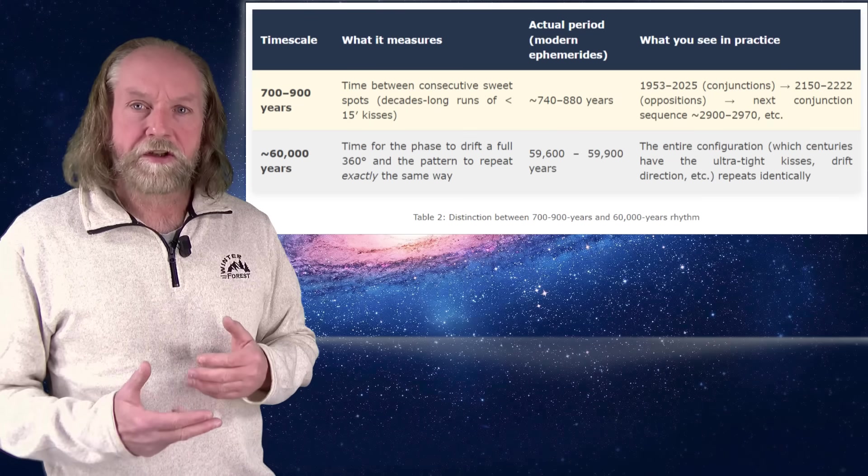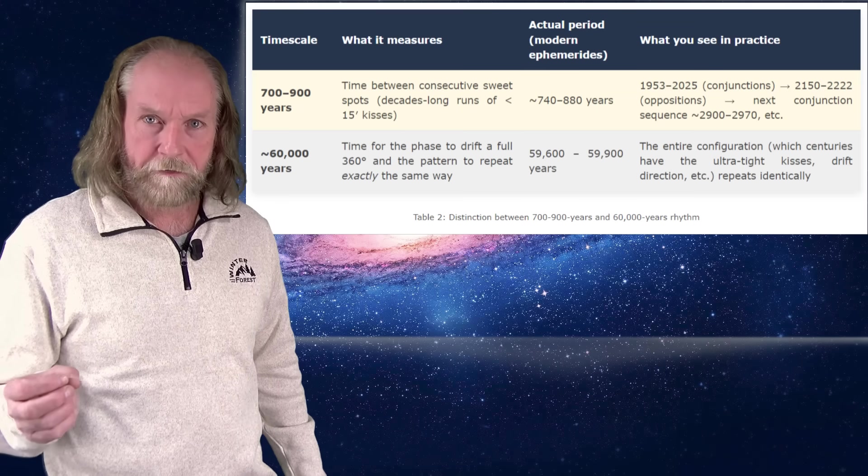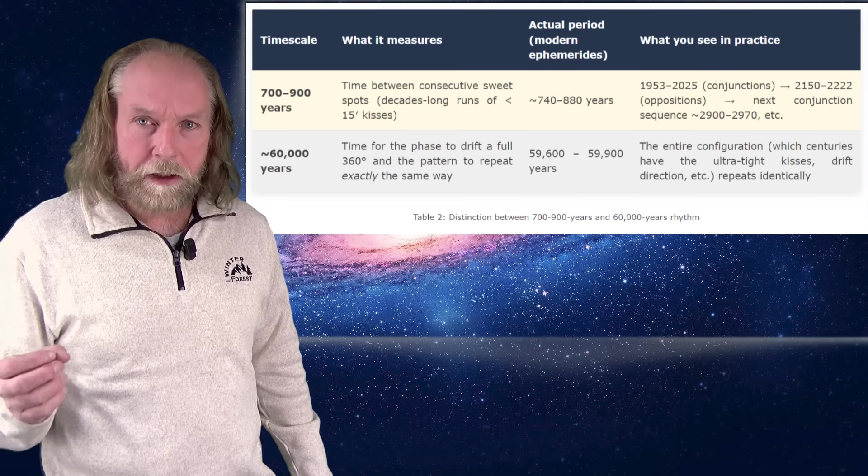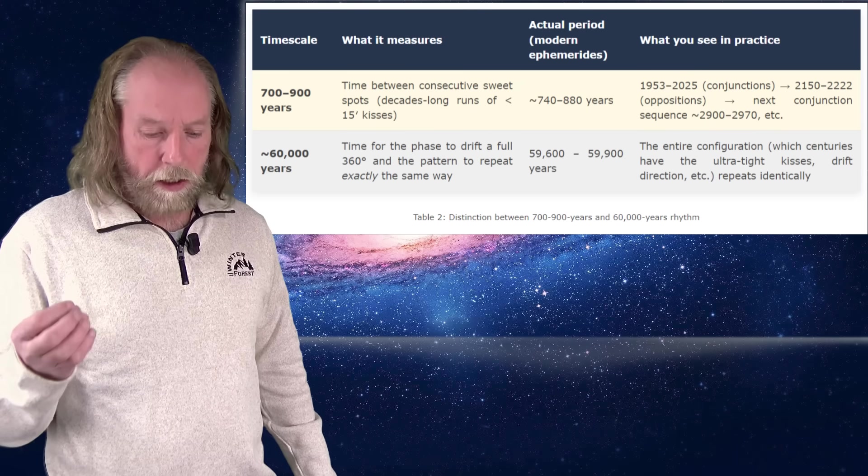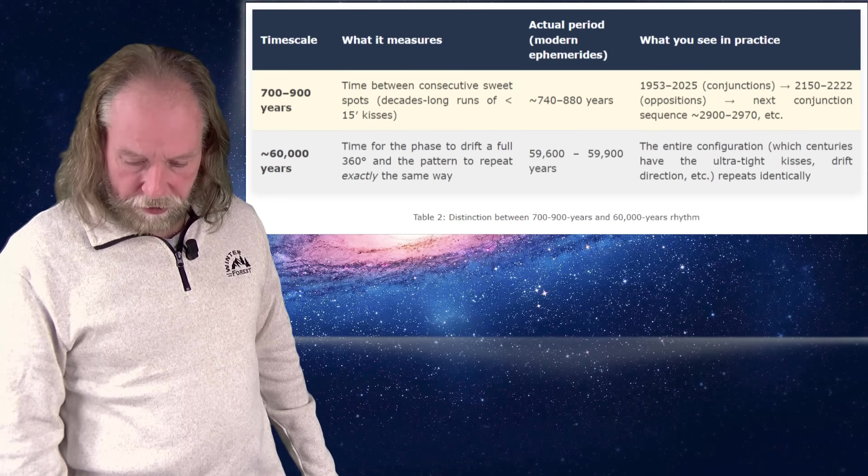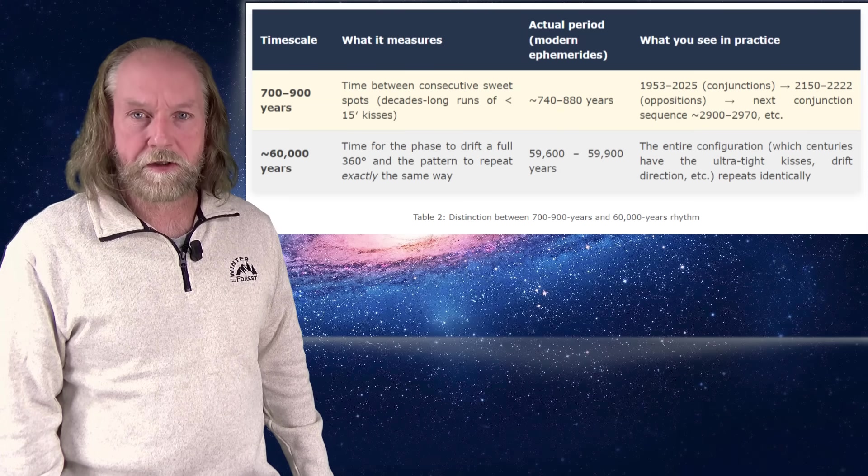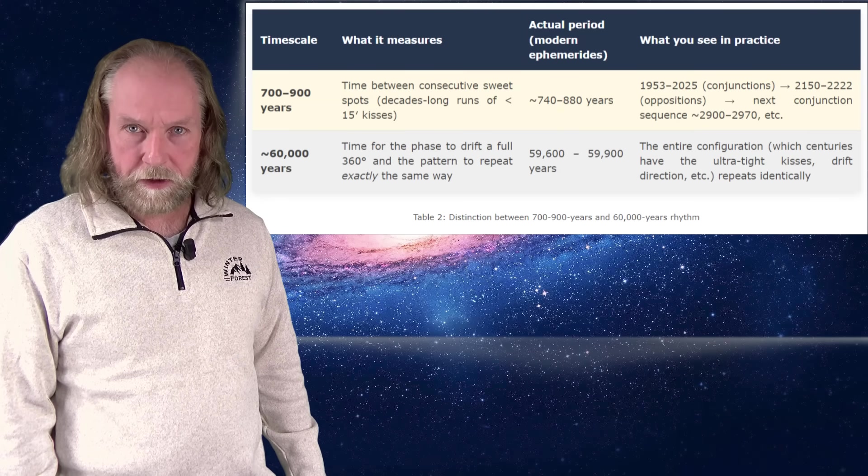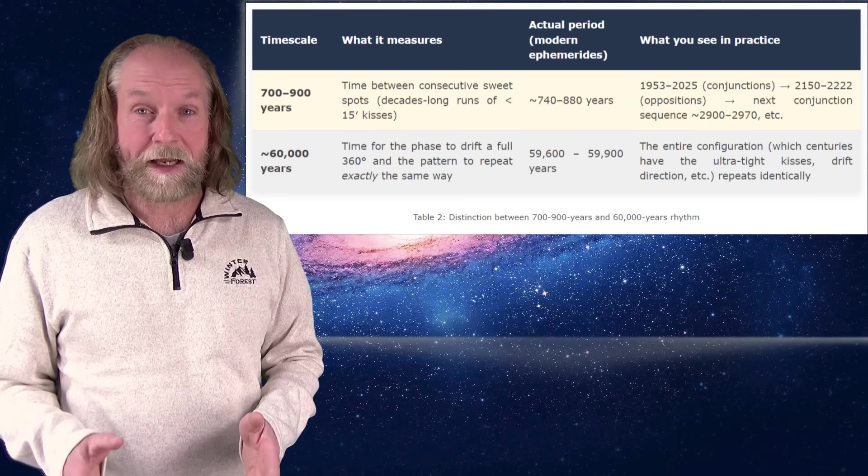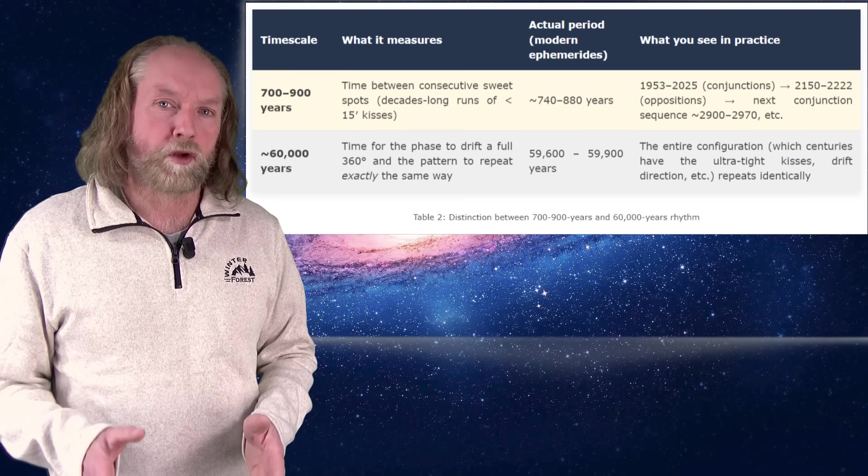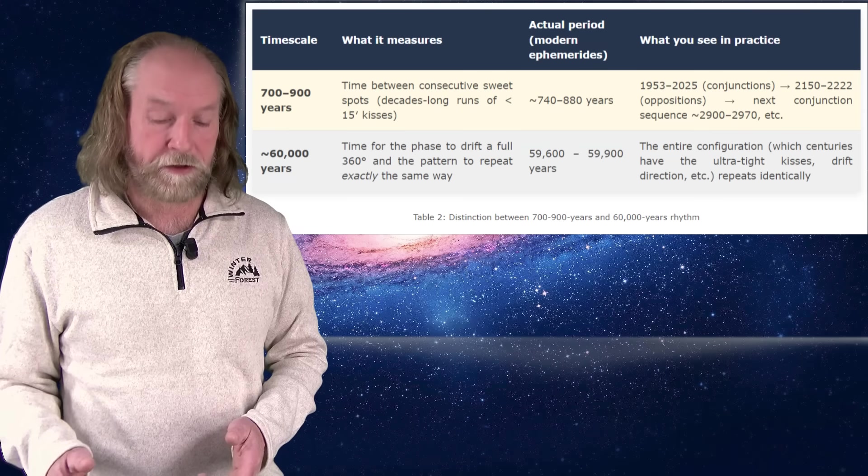But the entire sequence repeats itself after a full circle and that is 60,000 years. So we really live in a very interesting time that we have this unique quadruple pattern of Mercury, Sun, Saturn and Neptune in a very tight sequence from 1953 to 2025. Extremely exact. And we are experiencing the last very exact quadruple conjunction which will not repeat itself exactly in the same way in another 60,000 years.